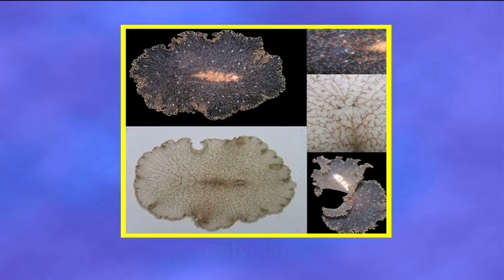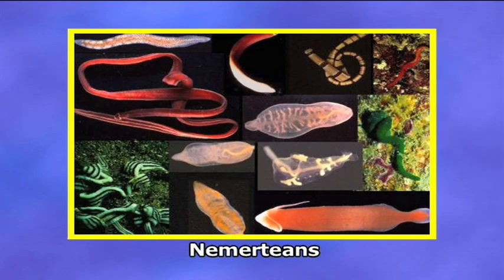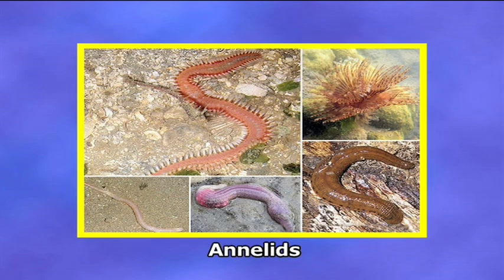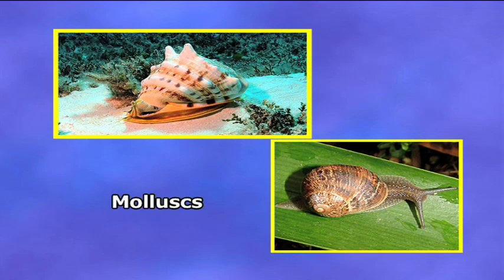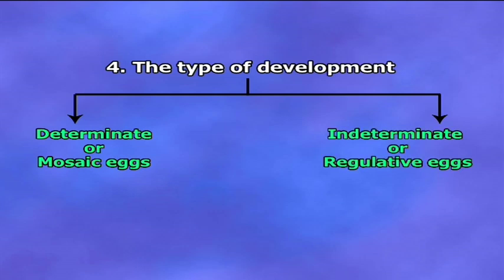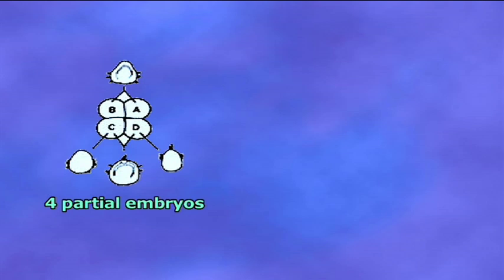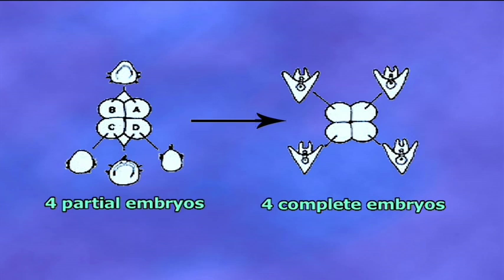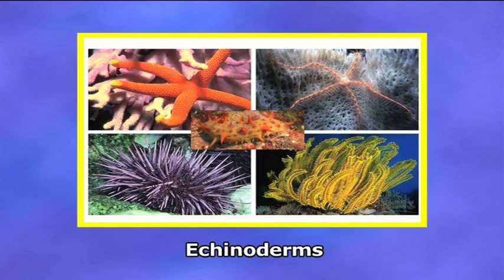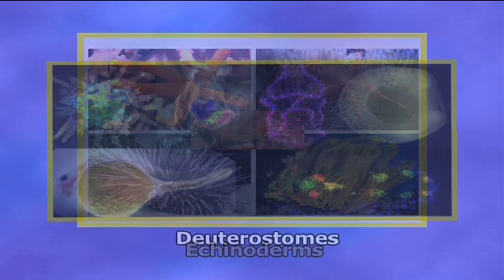Examples of mosaic eggs are provided by polyclads, nemertians, ascidians, annelids, and molluscs. Indeterminate or regulative eggs: in this type, there is no predetermination and the fate of various areas of the egg is not usually fixed until the first three cleavages have started. If the blastomeres are separated before the first three cleavages, then each blastomere develops as a whole embryo. Examples are echinoderms and deuterostomes.